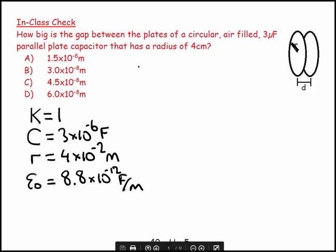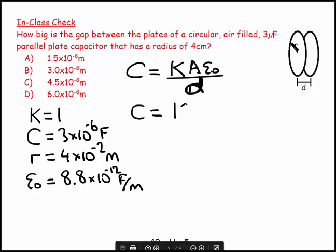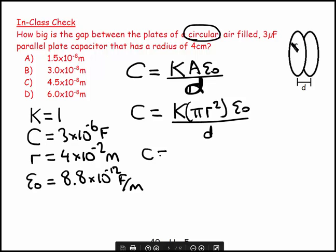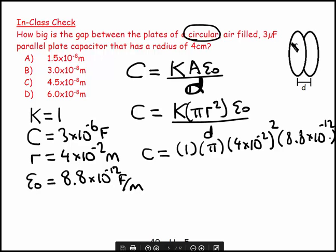Let's visualize. I am given the radius. The equation says that my capacitance is equal to K A epsilon naught over D. This equals K - let's think about A. There's no A on that list, but it's a circular plate. So that would be pi R squared epsilon naught over D. So C equals one times pi times 4 times 10 to the minus 2 squared times 8.8 times 10 to the minus 12, all over - sorry, my gap. I want to know my gap.